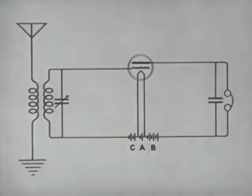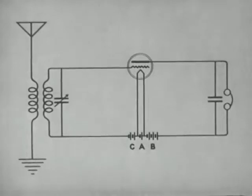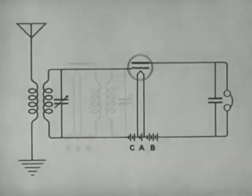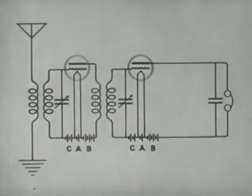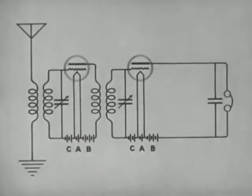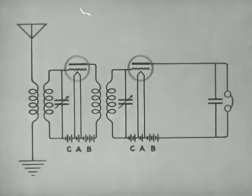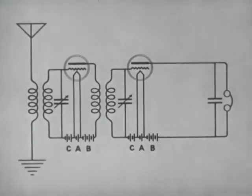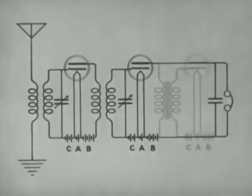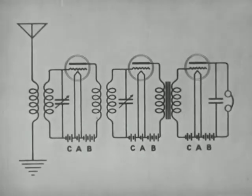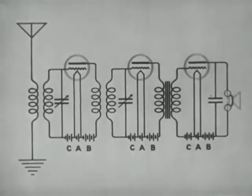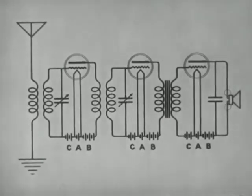If we wish a louder signal, we may add a radio frequency amplifier ahead of the detector. A still louder signal may be obtained by adding an audio amplifier after the detector. We can then use a loudspeaker instead of headphones.